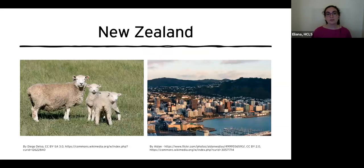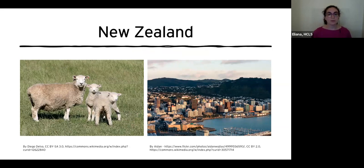New Zealand's economy is strong, based largely on agriculture and its products such as dairy and wool, and on tourism. Although it is far from other countries, New Zealand's unique and beautiful natural features and culture attract visitors from around the world. Most people in New Zealand live in cities, although with a total national population of almost 5 million, only Auckland has over a million people. Wellington, the capital and second largest city, has fewer than half a million — so they're not very big cities.